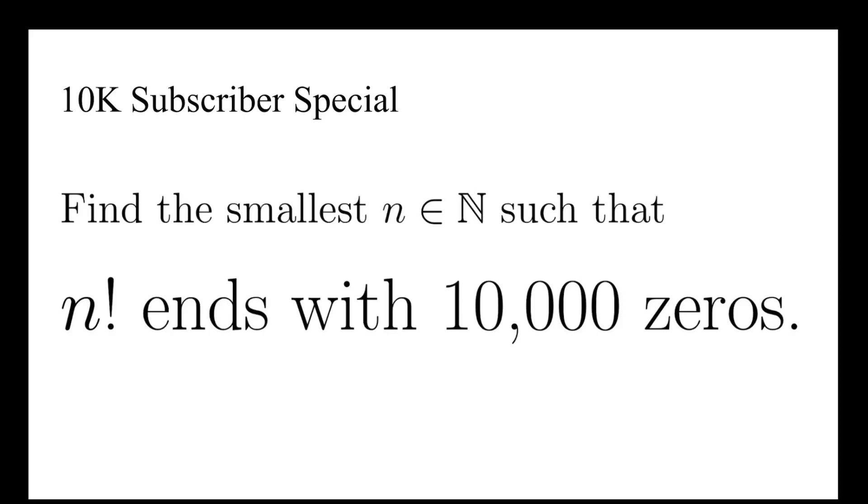This video is specially made for the moment that this channel has reached 10,000 subscribers. So we're going to find the smallest natural number n such that n factorial ends with 10,000 zeros.